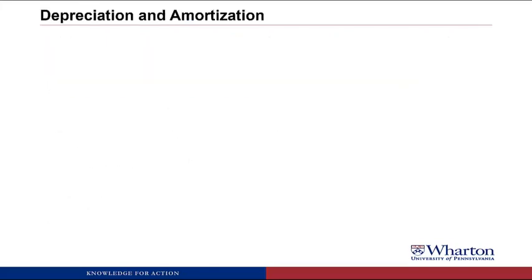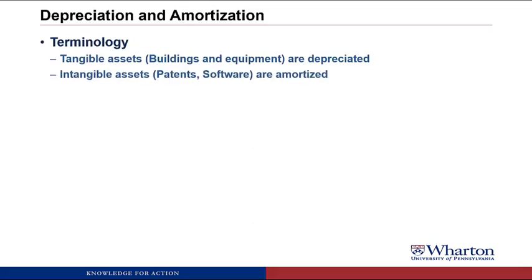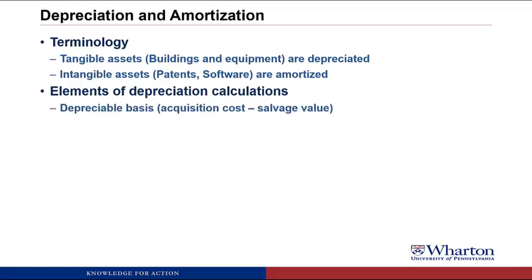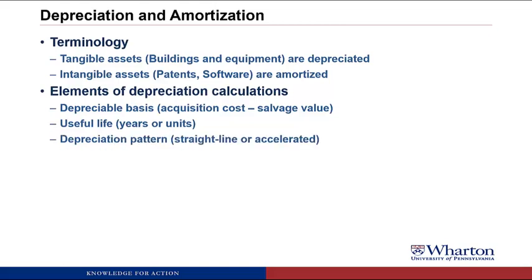Now that we've acquired an asset, we can talk about depreciating the asset over time. A reminder with the terminology: if it's a tangible asset, we call it depreciation, and if it's an intangible asset, we call it amortization. There are a number of elements you need to consider when calculating depreciation. First, there's something called the depreciable basis — this is the difference between the acquisition cost and the salvage value, which is what we think the asset will be worth when we're done using it at the end of its useful life. The useful life is how long we think we're going to use the asset. You could also base this on number of units — if you thought an asset would produce 5 million units over its life, and this year we produced 1 million units, then you would take one fifth of the value as depreciation in year one. The final element is the depreciation pattern, either straight line or accelerated.